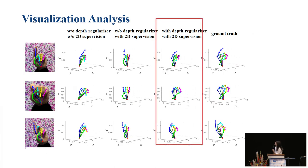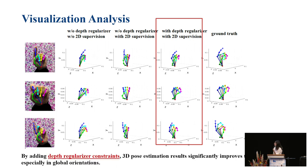We also show visualization analysis. There are four columns: the last column is the ground truth of the 3D skeletons. The first column uses the model directly trained by synthetic dataset, not very accurate. We add 2D supervision and it works better. The third one uses depth-regularizer with 2D supervision. By adding depth-regularizer constraints, the 3D pose estimation results significantly improve, especially in global orientations.